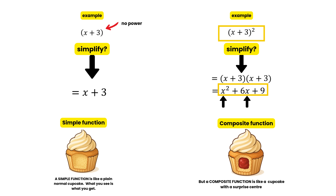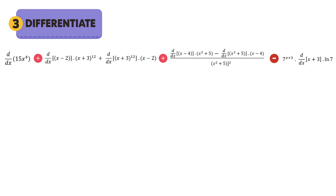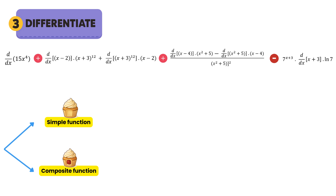These hidden x's have big implications for differentiation, because when we differentiate we have to differentiate all the x's, even the ones hidden inside. So let's sum up the cupcake story: when we get to step three we'll come across two types of functions — simple functions and composite functions. We need to tell them apart because the way we differentiate them is completely different. If it's just a normal bracket, it's a simple function — what you see is what you get, like a plain cupcake. If it's a bracket raised to a power, it's a composite function with x's hiding inside that we still have to differentiate.